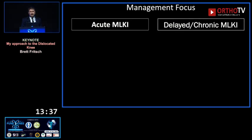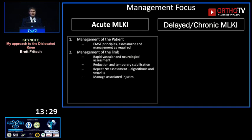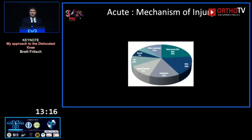The first step is getting your priorities right. The acute and delayed multi-ligament knee injury are very different beasts. In the acute setting you're often dealing with multi-trauma: manage the patient, then manage the limb — vascular and neurological issues — then manage the knee. In the delayed presentation the patient's stable, so you can focus on diagnosing the exact pattern of instability.